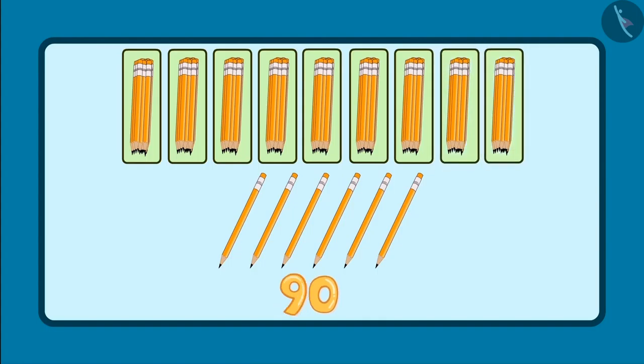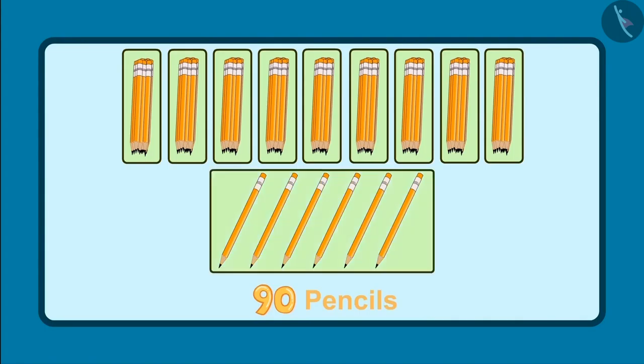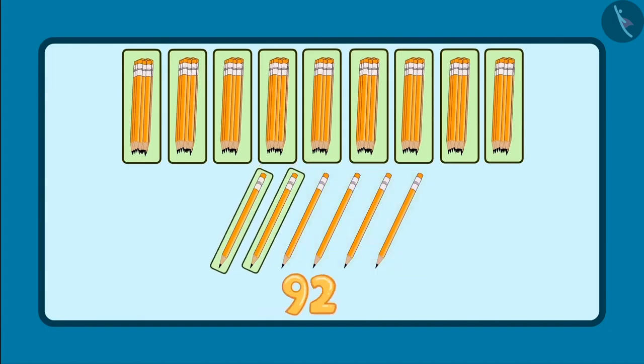So these are ten, twenty, thirty, forty, fifty, sixty, seventy, eighty and ninety. This means there are ninety pencils and plus six pencils more.